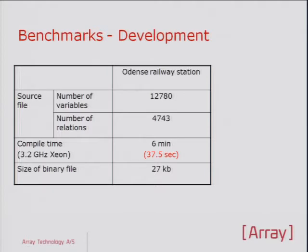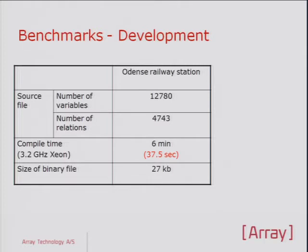Looking at the benchmarks: the number of variables is more than 12,000, the number of relations to begin with is about 4,700, and the compile time to determine the entire solution space is about six minutes using our C++ compiler. In fact, it runs a little bit faster in APL. I used APL as a prototyping tool at that time and tested on the old APL version 2, where it runs much faster than the C++. The output binary file is just 27 kilobytes — you could run it on a mobile phone or embedded in the electronic equipment controlling the trains.